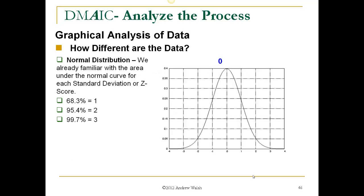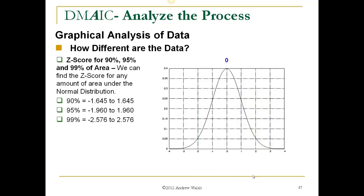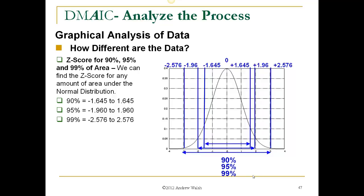Now, the normal distribution, we're already familiar with the area of the normal curve for each standard deviation, or z-score. Here we see that plus or minus one standard deviation is worth 68.3% of the distribution. Two standard deviations cover 95.4%, and three standard deviations cover 99.7%. The z-score for 90%, 95%, and 99% of the area, we can find the z-score for any amount of area under the normal distribution. So for the 90% distribution, it goes from minus 1.645 standard deviations to 1.645 standard deviations. So here we see the 90%, here we see the 95%, and here we see the 99%.